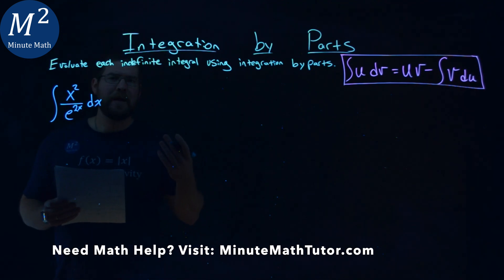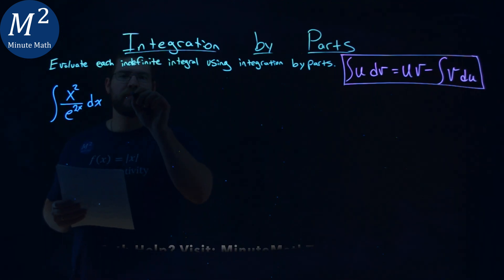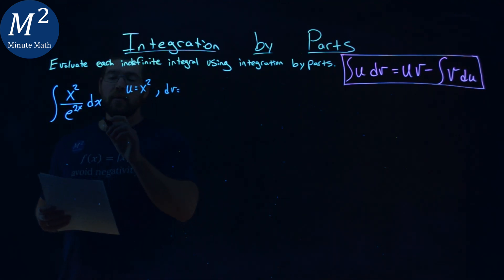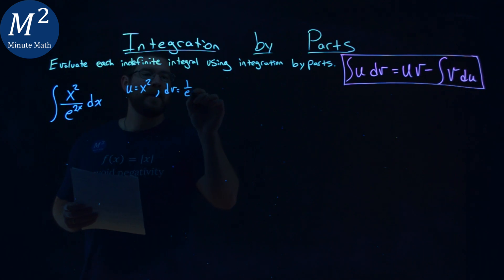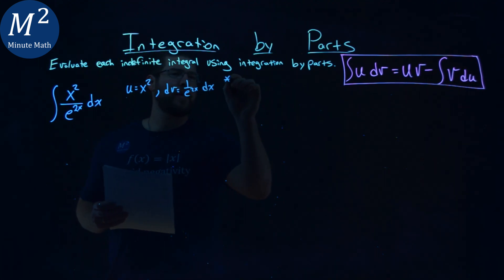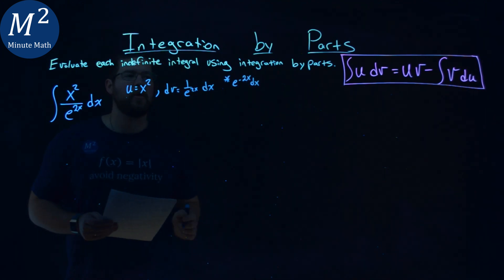So we first want to set a u and a dv value. Let's set my u value equal to the numerator, x squared, and my dv value equal to 1 over e to the 2x power dx. And we know that's the same thing as e to the negative 2x power dx. So keep a note of that.